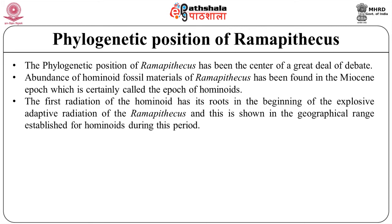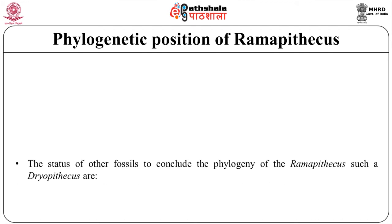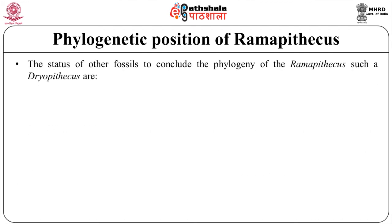The remarkable evolutionary success represented by this adaptive radiation is shown in the geographical range already established for hominoids during this period. Miocene hominoid fossils have been discovered in France, Austria, Spain, Czechoslovakia, Greece, Hungary, China, India, Pakistan, Turkey, Saudi Arabia, Egypt, Uganda, and Kenya.